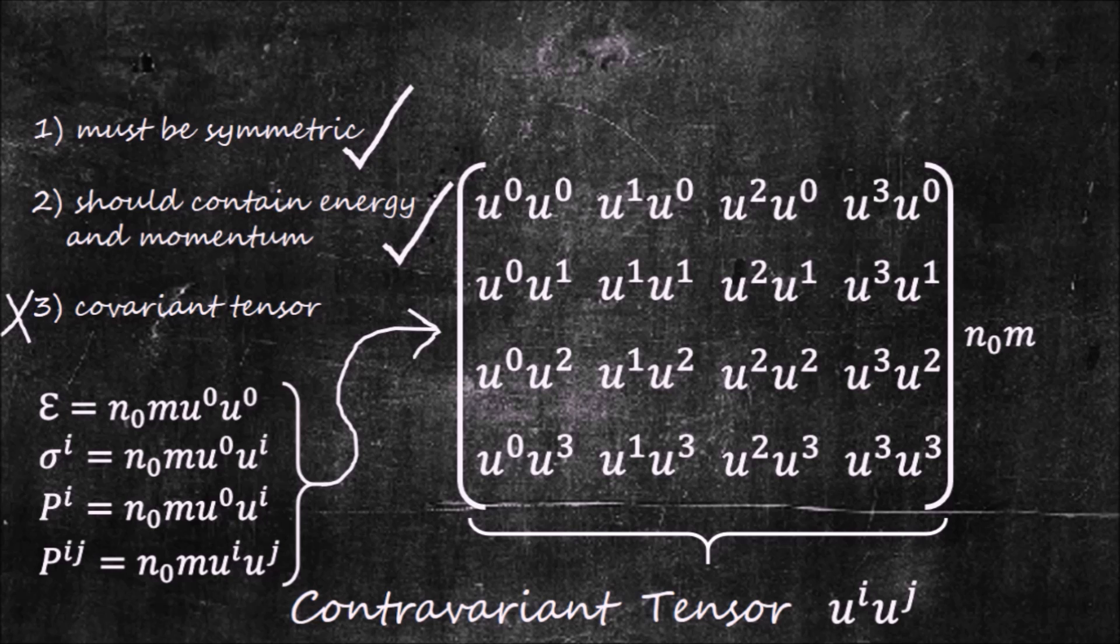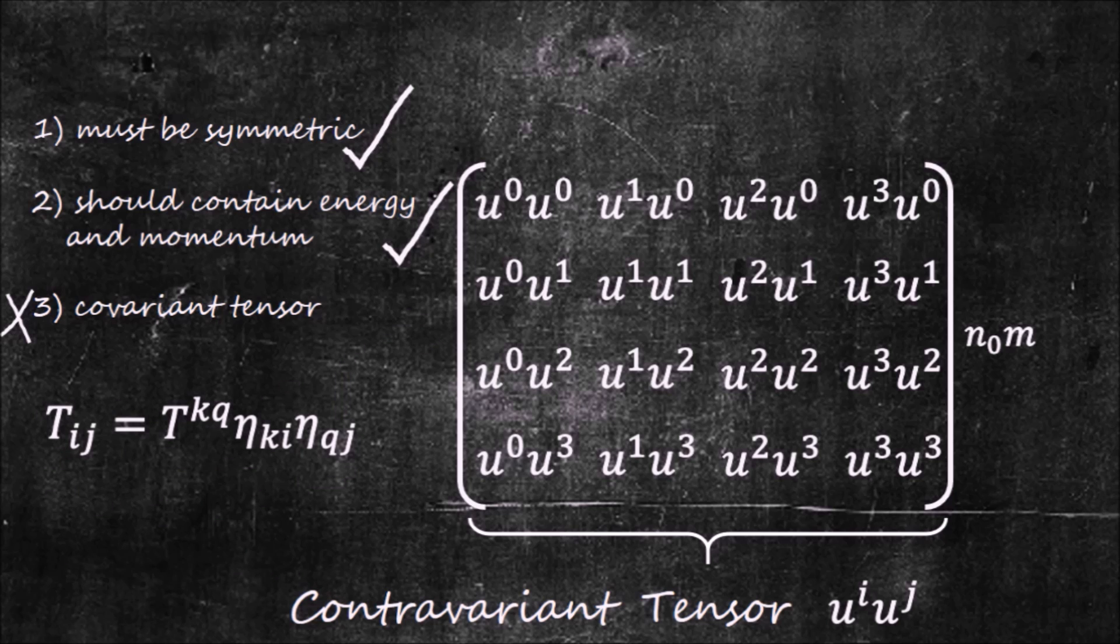This, however, is not a big issue, because we can always transform tensors from one kind to another, using what's called a contraction, where eta is again the flat spacetime metric. So, the contracted energy momentum tensor is covariant.